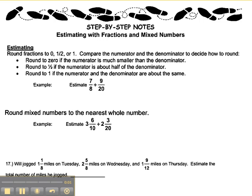When estimating with fractions, you first need to know whether or not it's a fraction or a mixed number. If it's a fraction, you round to 0, half, or 1. Compare the numerator and the denominator to decide how to round.